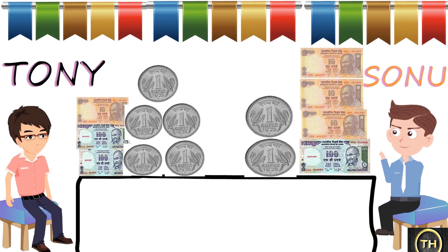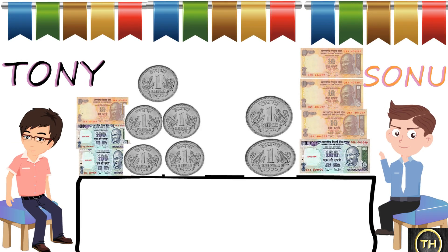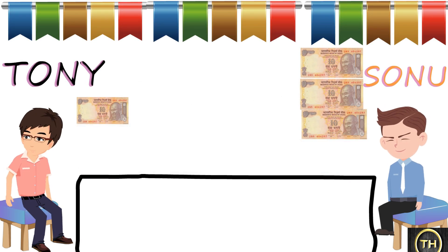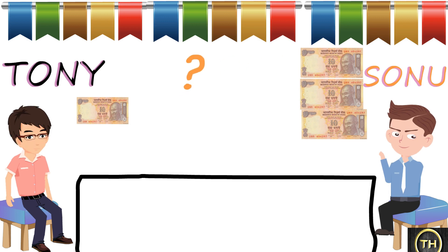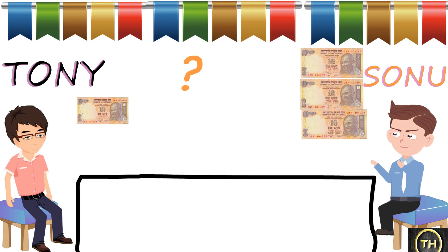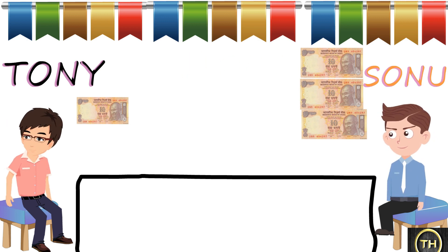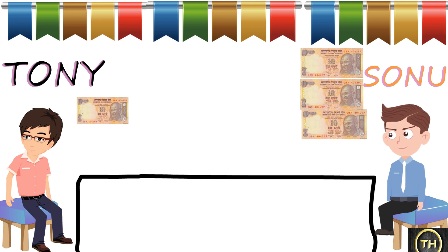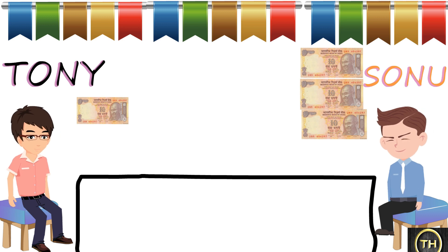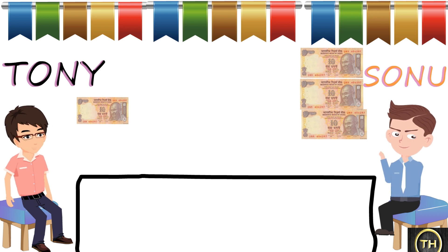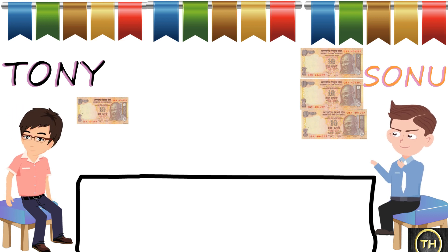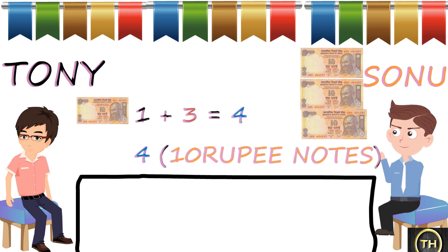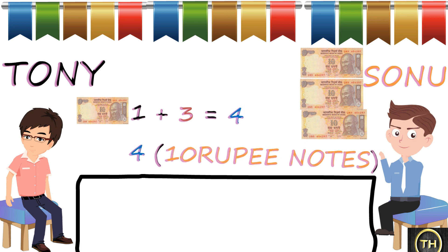How many ten rupee notes do they have altogether? Let us count. Tony has 1 ten rupee note and Sonu has 3 ten rupee notes. So 1 plus 3 is equal to 4. There are a total of 4 ten rupee notes.